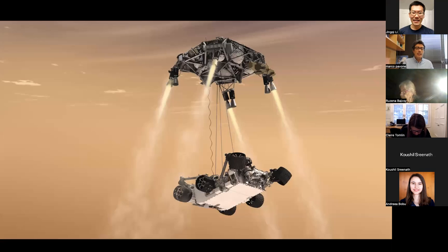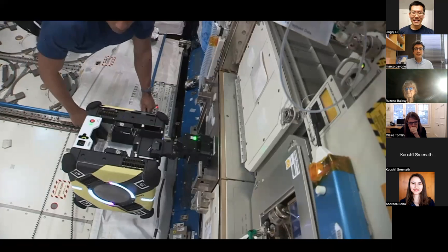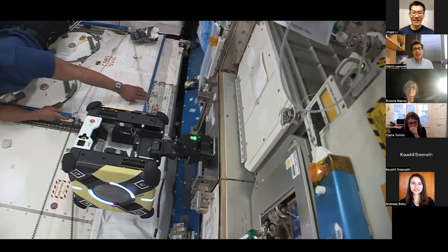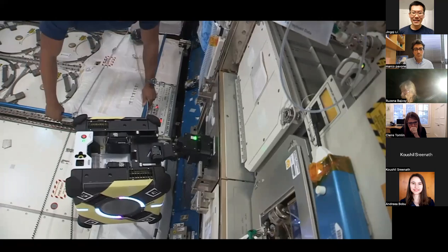My research is broadly in the field of decision-making and planning algorithms for autonomous systems. A key application domain is space robotics. As a research technologist at NASA Jet Propulsion Lab before joining Stanford, I worked on optimizing the entry, descent, and landing of travelers on the surface of Mars.